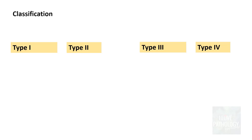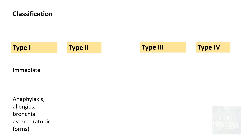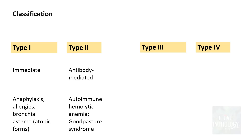By now you know that there are 4 types of hypersensitivity reactions: type 1, type 2, type 3, and type 4. Type 1, which we have already discussed, is the immediate hypersensitivity reaction where we talked about anaphylaxis and allergies. So today we will be studying antibody mediated hypersensitivity reaction, or type 2 hypersensitivity reaction.